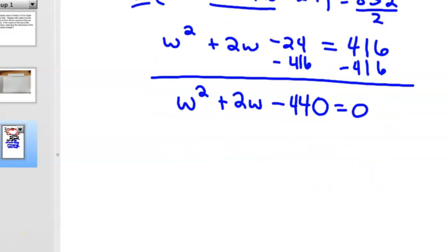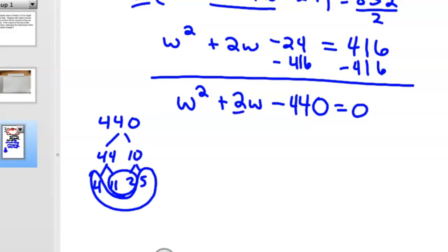So we need to then either factor this, and just off to the side, what's a good idea is, 440. We know that breaks into 44 and 10, 4 and 11, 2 and 5. And if you look at this, 22 and 20, if you have a difference of 2, thinking about it factoring. So, so this is W plus 22 and W minus 20 equals 0. So if you FOIL that, or distributed it back, you'd get the W squared plus 2W minus 440, but this is your linear factors.